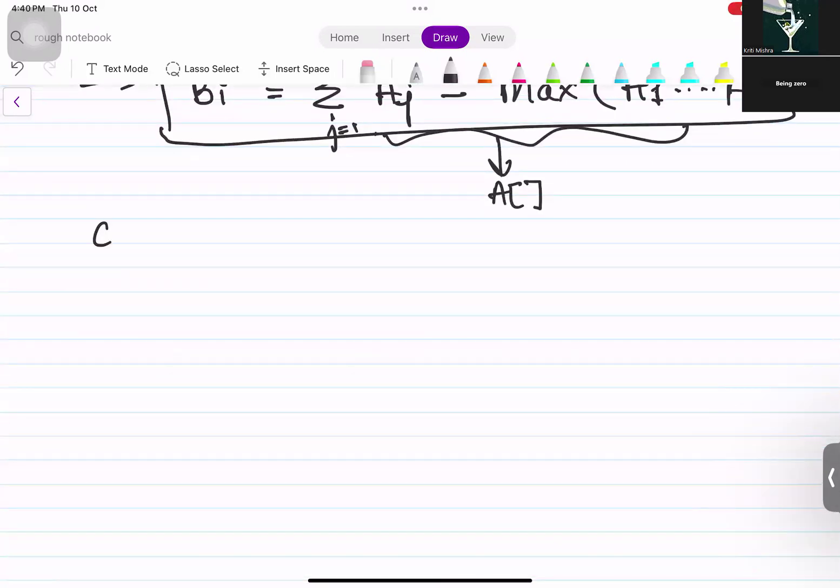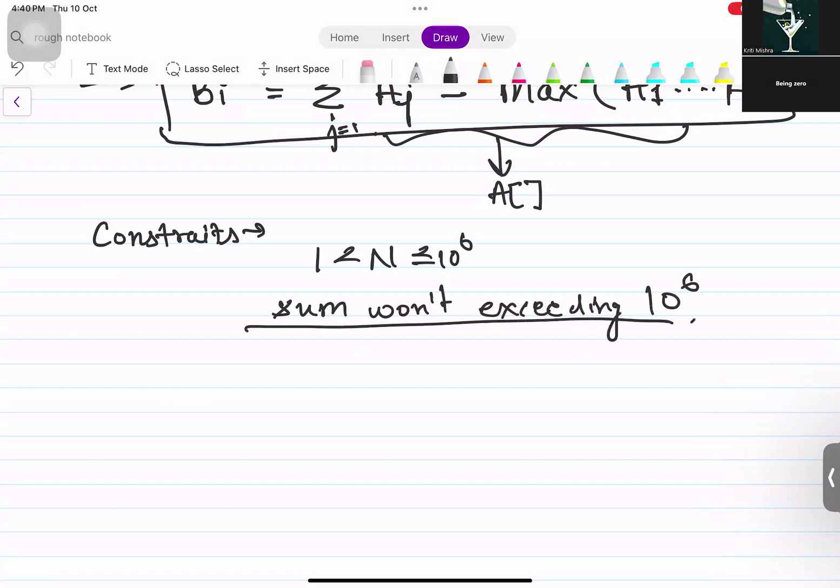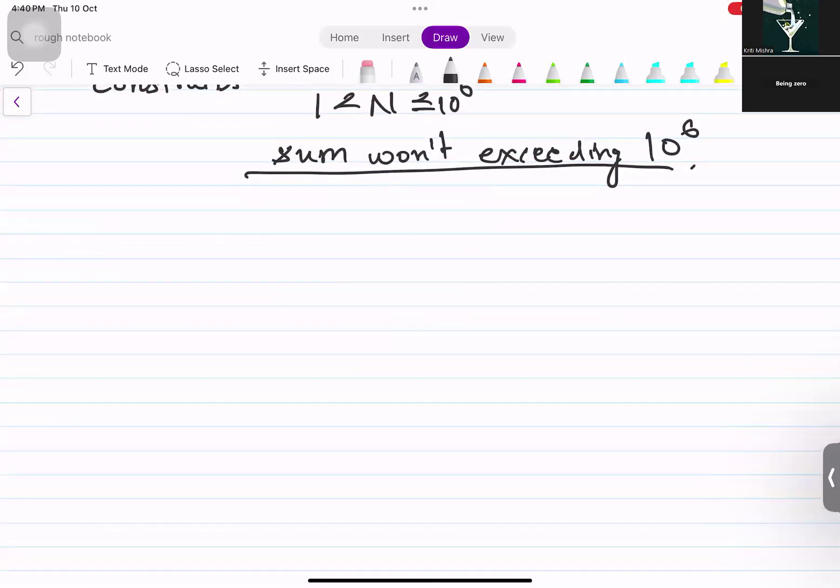They have provided us with some constraints as well, which are the input is lying from 1 to 10 to the power 6 and the sum won't be exceeding. So we would be using int all through, no need to use long. After this, they have provided some test cases. In the output, we want only one possible combination of the array A which is the valid combination, and it must follow the approach that is explained in the question.